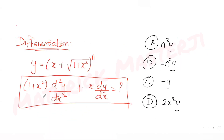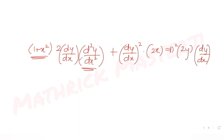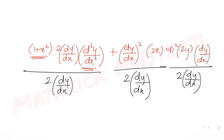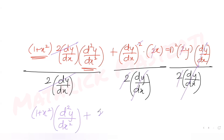Comparing with the question, we want (1 + x²)·d²y/dx². Dividing throughout by 2·dy/dx: the 2 and dy/dx cancel on each term. We are left with (1 + x²)·d²y/dx² plus x·dy/dx, which equals n²y.